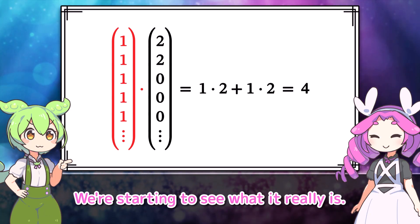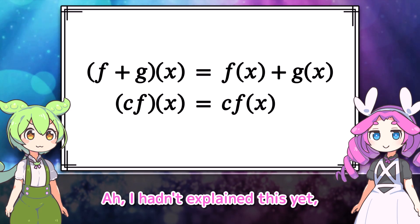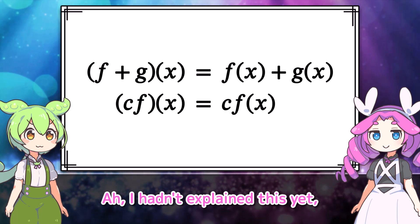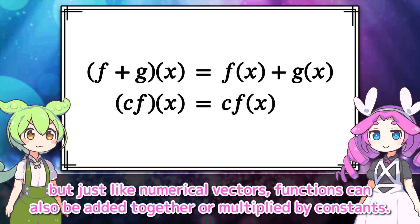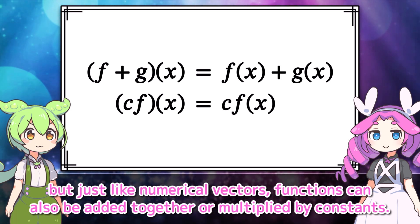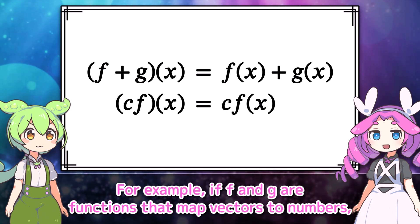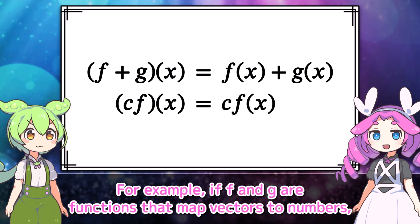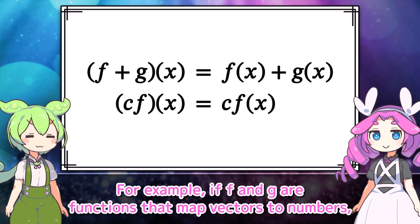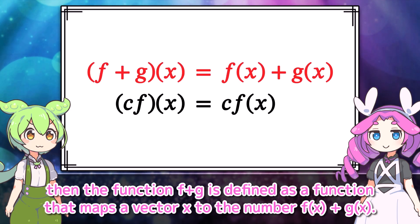I'm starting to vaguely understand what happened earlier. In the upper world, there is a condition that all but a finite number of components are zero. But in the underworld, that condition doesn't exist, and a broader world expands. This is exactly an example of the infinite-dimensional dual space being broader than the original space.